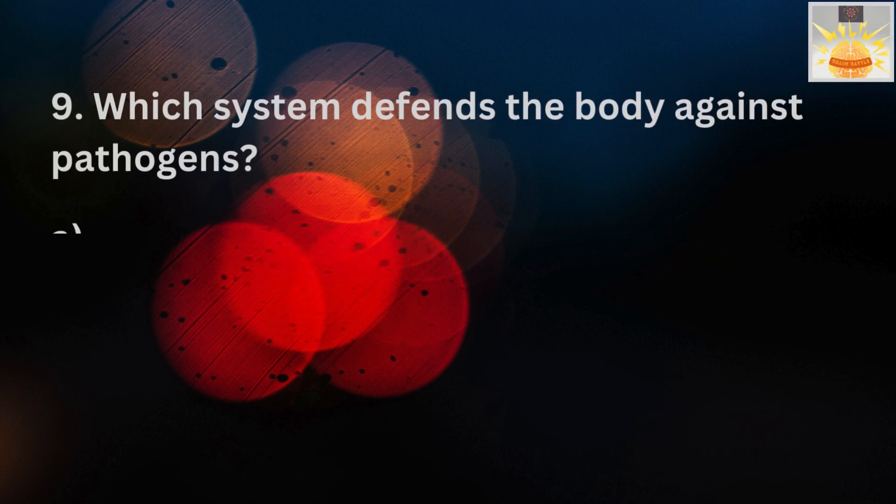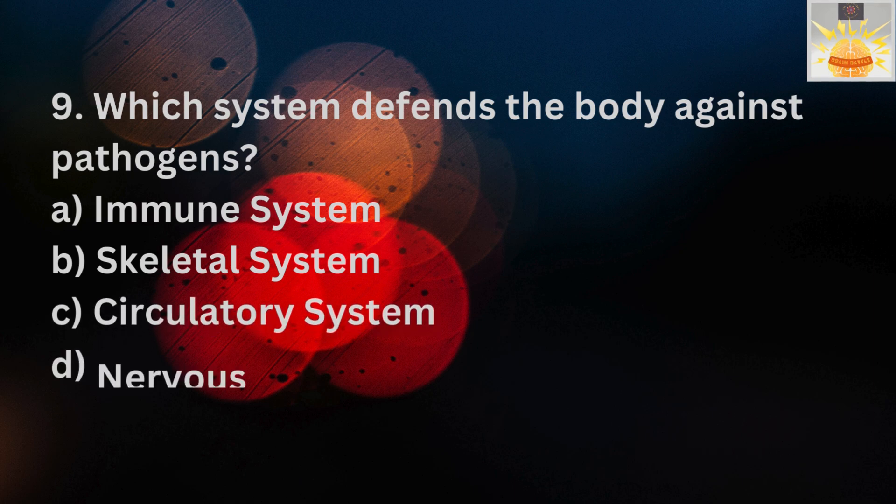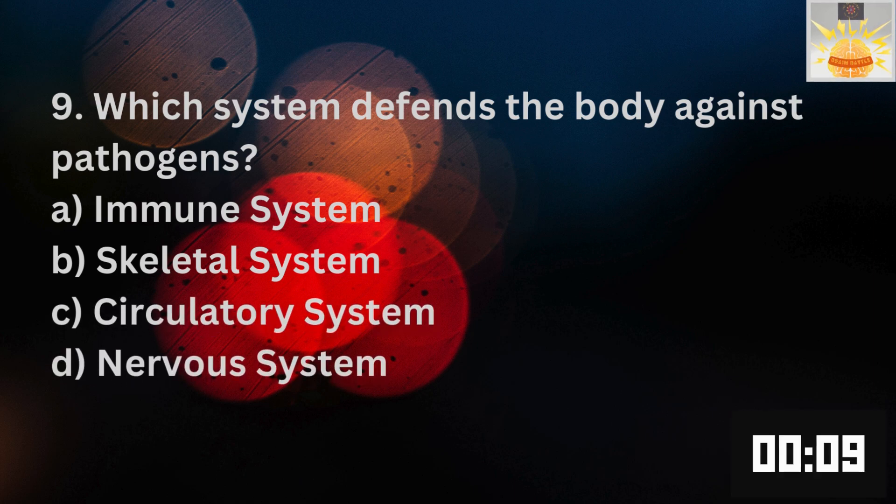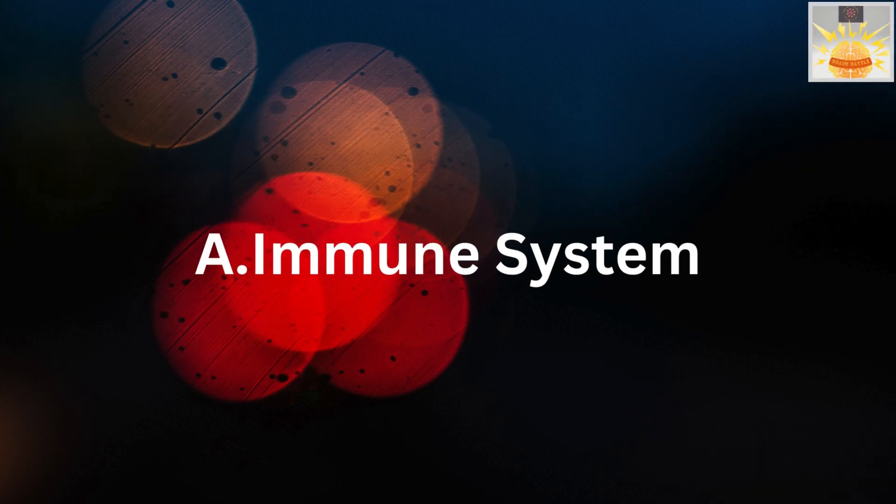So, the next question is, which system defends the body against pathogens? A. Immune system. B. Skeletal system. C. Circulatory system. D. Nervous system. The right answer is the A. Immune system. I am sure that most of you got that one right.